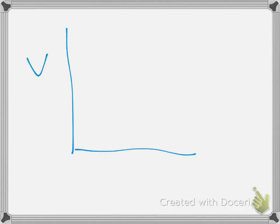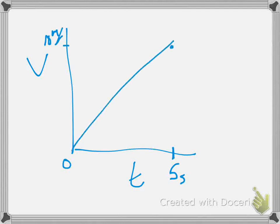This whole unit is really about graphing, so let's start with a velocity versus time graph. Velocity is on the y-axis, time is on the x-axis. The car starts off at zero at time zero, and five seconds later he's up at 10 meters per second. So we plot those two points and connect them.